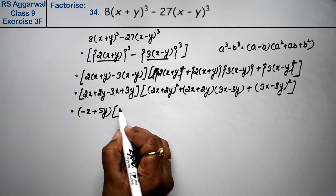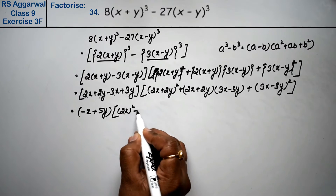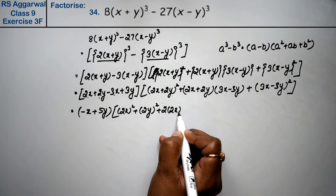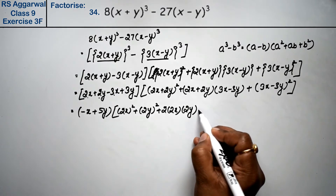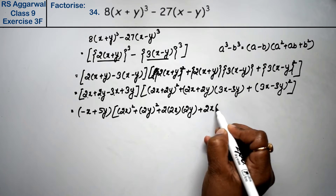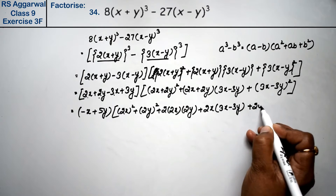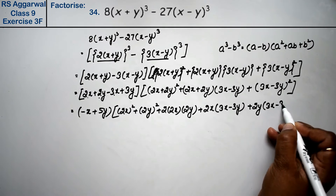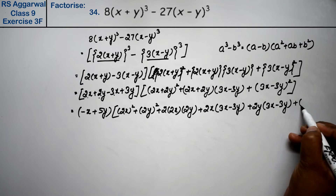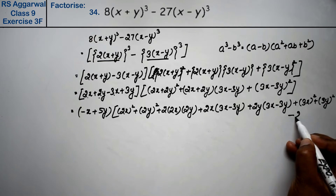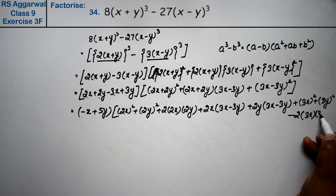Now see: a² + b² + 2ab. We expand: plus 2x into (3x-3y) plus 2y into (3x-3y). Then a² plus b² minus 2ab. Bigger bracket closed.